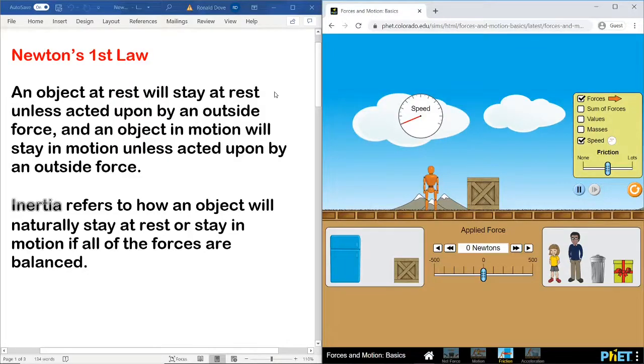So, over here on the left side, we have Newton's First Law. Newton's First Law says an object at rest, that means not moving, will stay at rest unless it's acted upon by an outside force, meaning a push or pull from outside of that object. And an object that is in motion or moving will keep moving or stay in motion unless it is acted upon by an outside force.